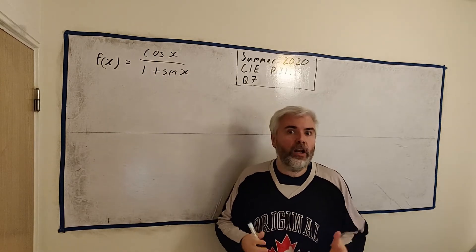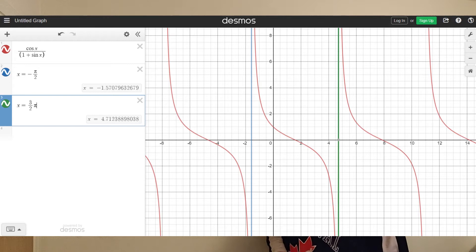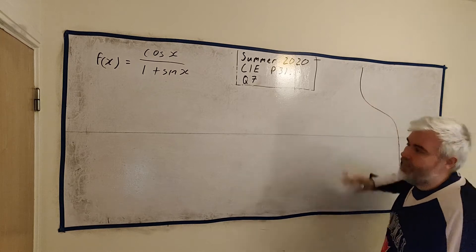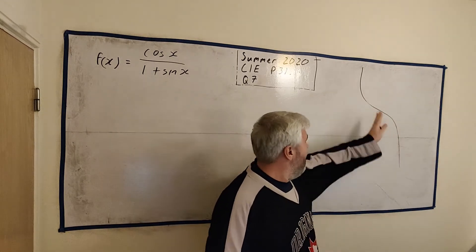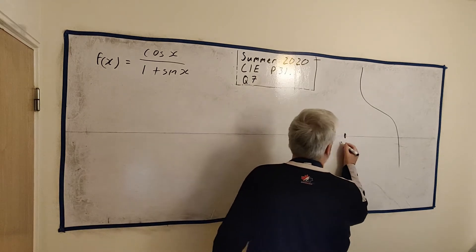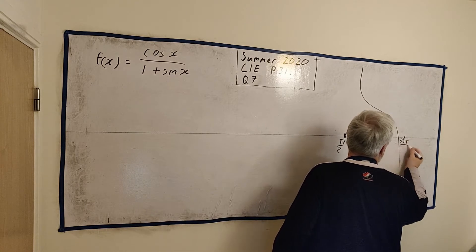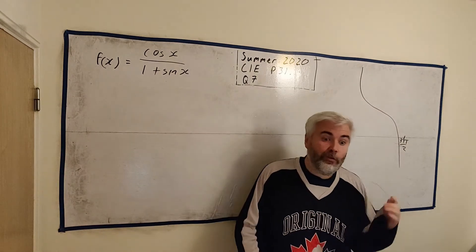You can use any online tool. I'll pop on the screen now an image from one of them. And as you can see, it has this wavy function, repeats over time. The question tells us only to look between minus π over 2 and 3π over 2. So I've marked those lines in there.